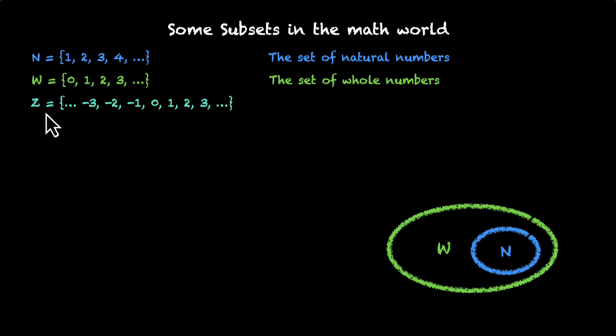We have z as the third set. This is a set of integers. So it has everything that n and w have and some more. The integers are also negative. So we have 0, 1, 2, 3 and we have –1, –2, –3 and so on.